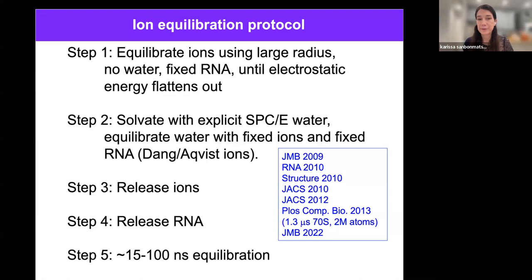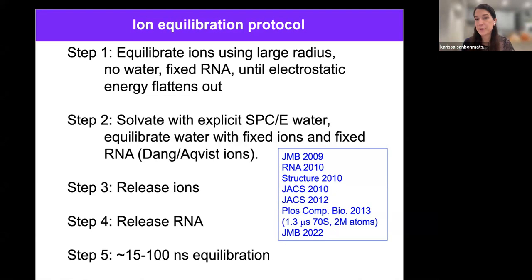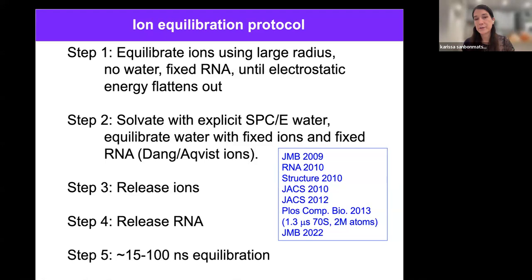Nowadays we often do a microsecond equilibration because times have changed, but in the earlier days we did 10 to 100 nanosecond equilibration. We use this in one of our latest papers in JMB 2022 where we're using PLUMED and metadynamics. We believe this is really critical — doing a careful treatment of the ions. Of course, you can't use counter ions. No one should ever use counter ions.